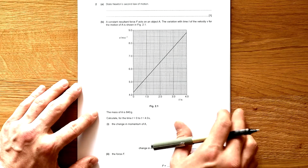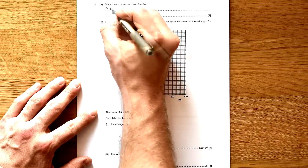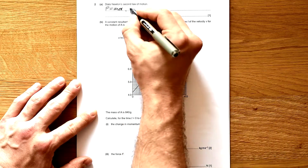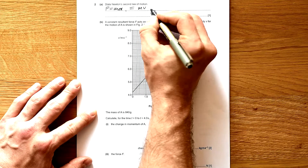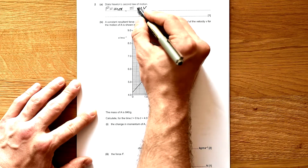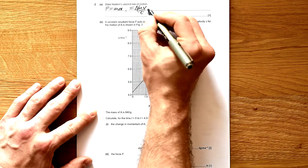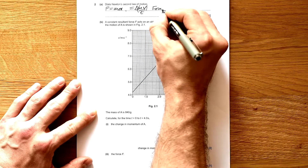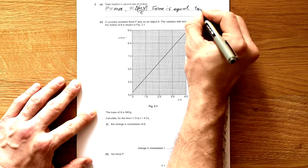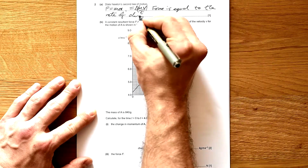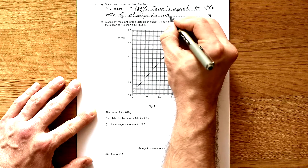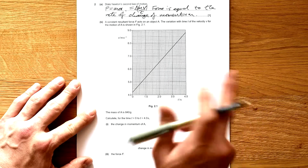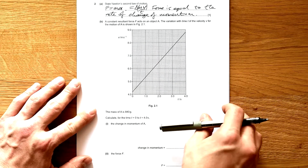Question 2: state Newton's second law of motion. We know the standard equation is F equals Ma, but acceleration is change in speed over time, so force equals the rate of change of momentum — that is the proper version of Newton's second law. F equals Ma is true, but only if we have a constant mass.